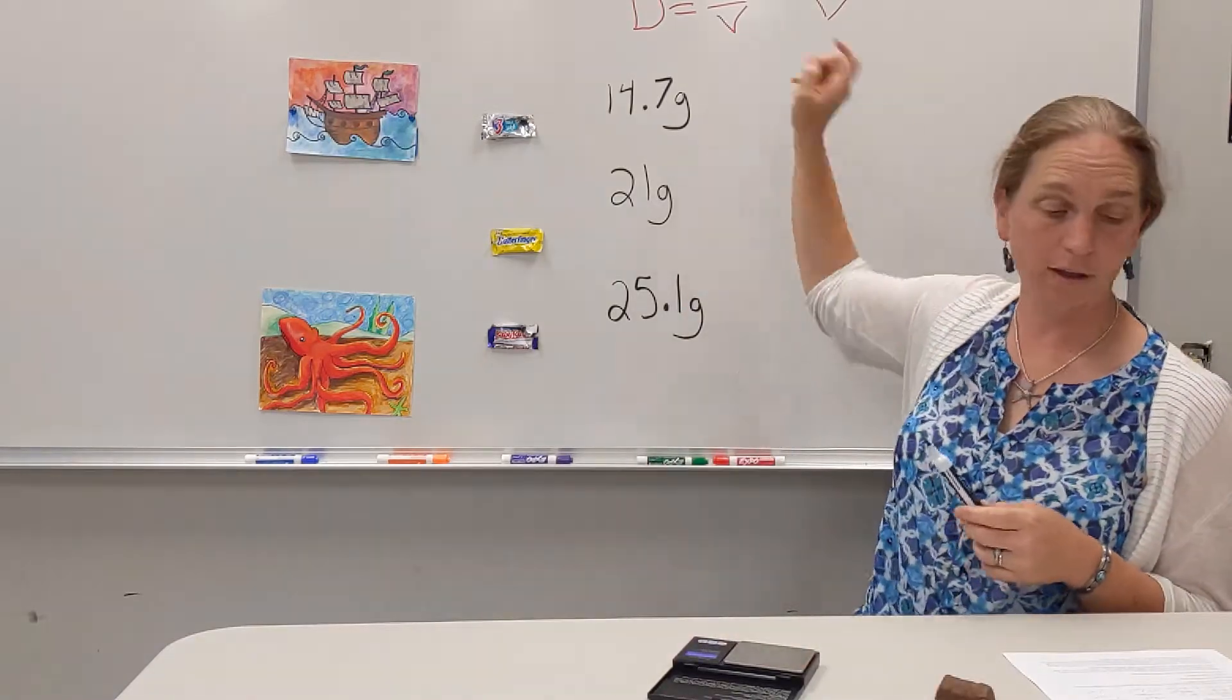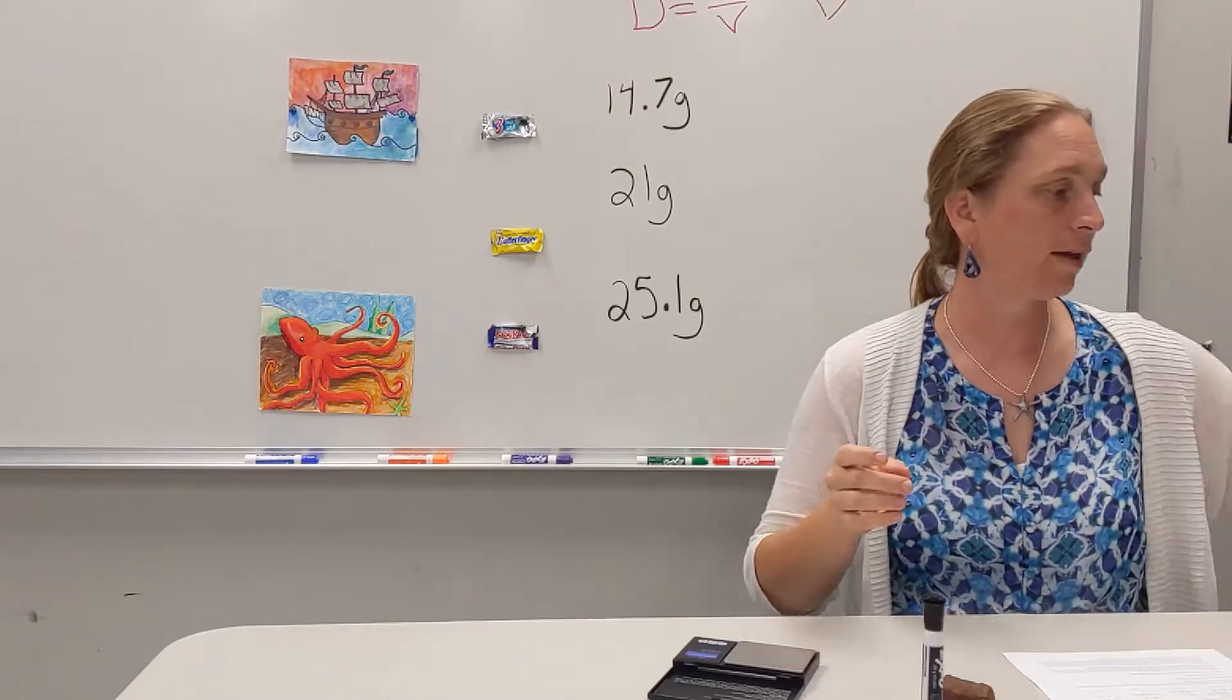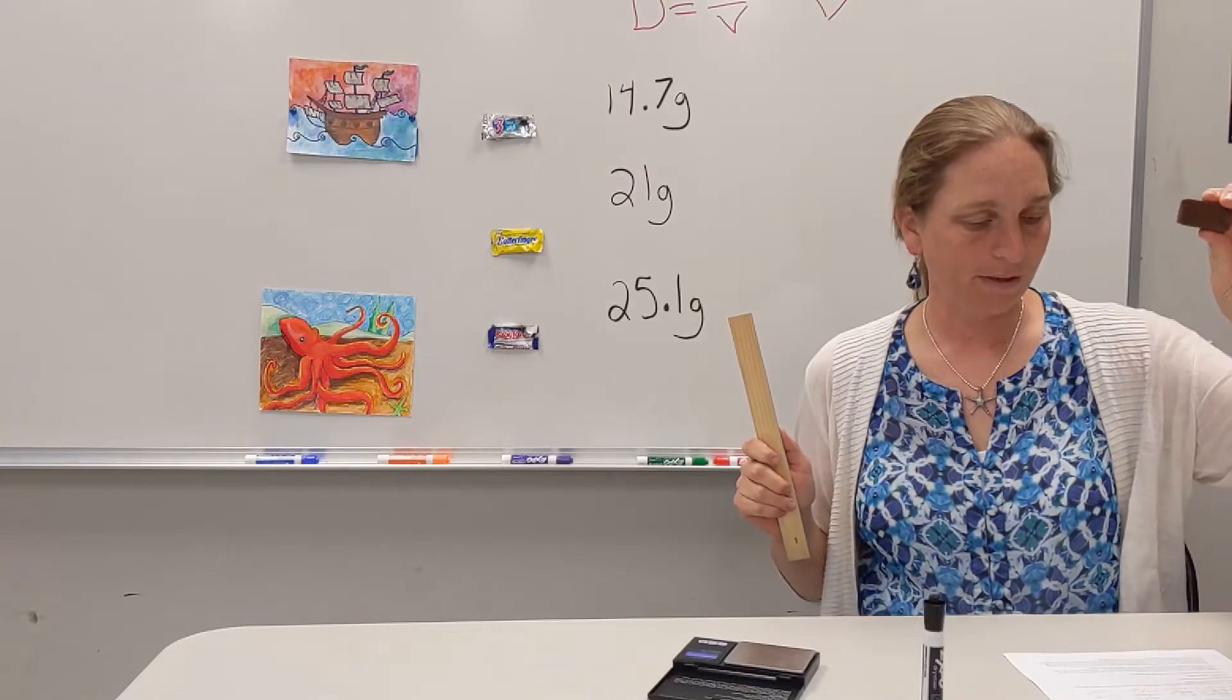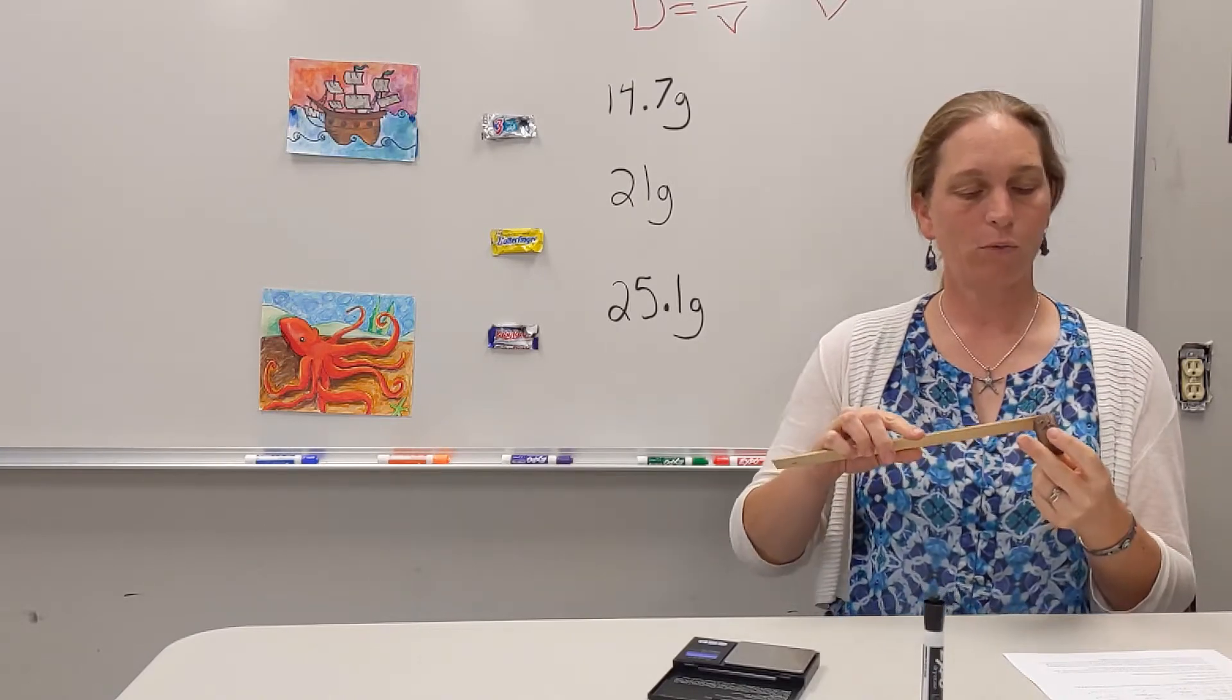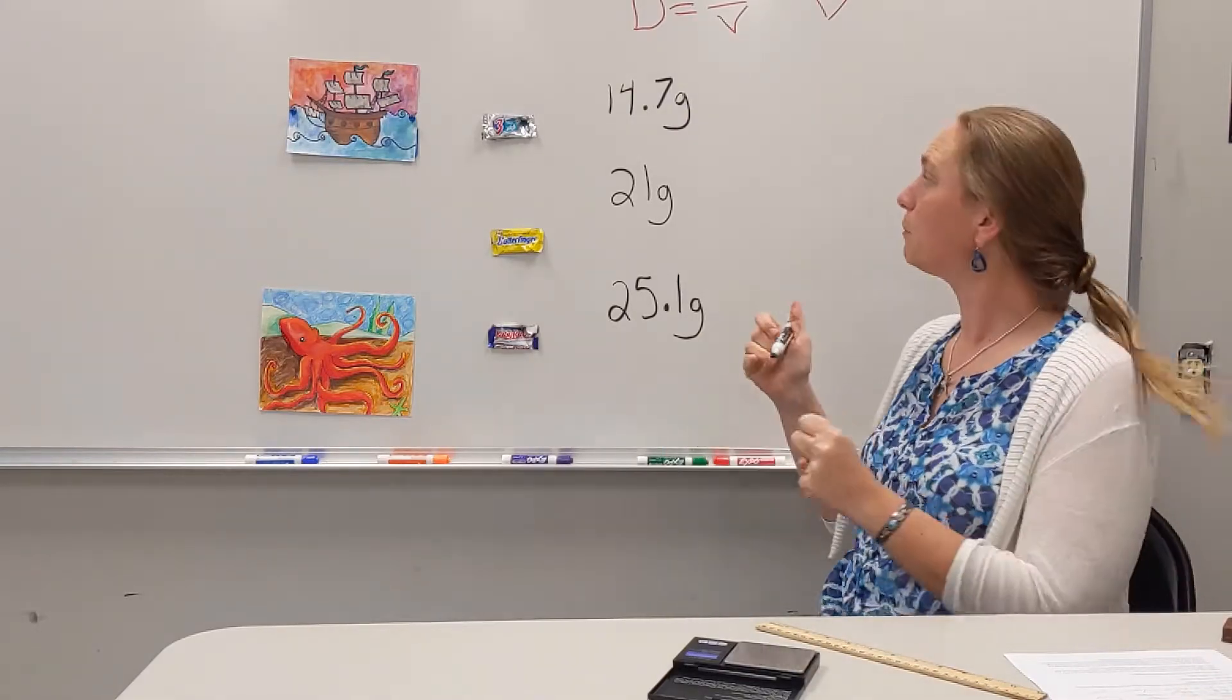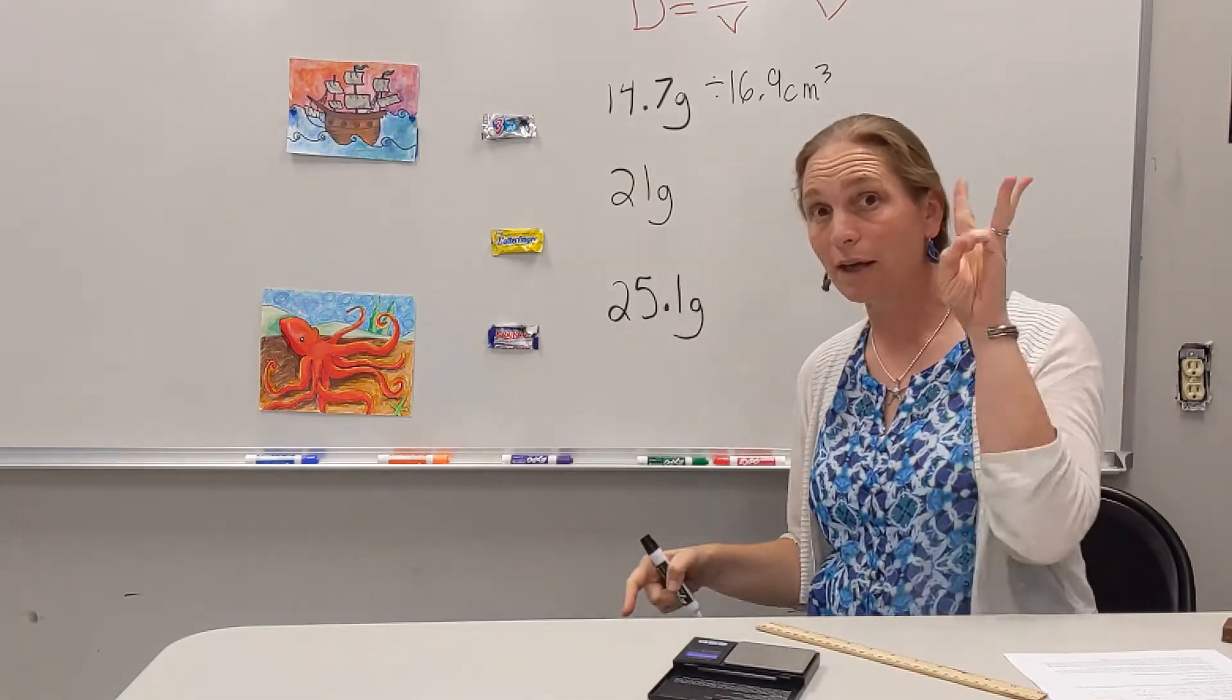Now I need to figure out my volume. All right, now we found out there's two ways to do volume. For the lab we did last time we used our graduated cylinder, and the other way you can do it is with a ruler and you can measure the length times width times height. That's how you find out an area of something, what its cubic footage is. All right, so I'm going to take my Three Musketeers and I'm going to measure it. First I'm going to measure the length. The length is 4.5 centimeters by the width which is 2.5 by the height which is 1.5. 4.5 times 2.5 times 1.5 is 16.9 cubic centimeters.